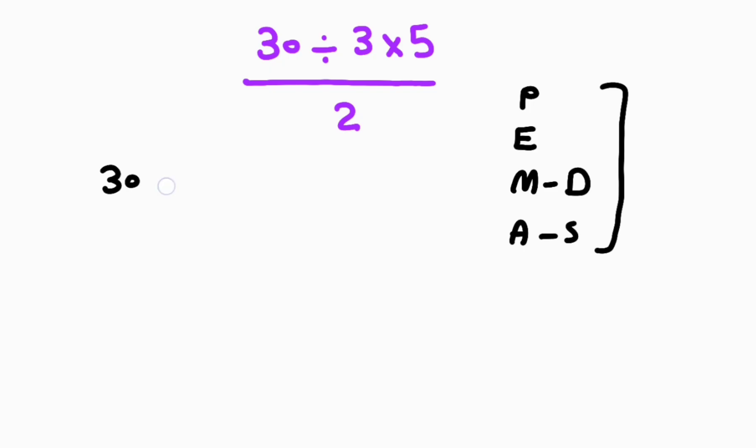We have 30 divided by 3 times 5 in parentheses, divided by 2. We can write this instead of using fraction division. So according to PEMDAS, in the first step we have parentheses that we have to solve first.